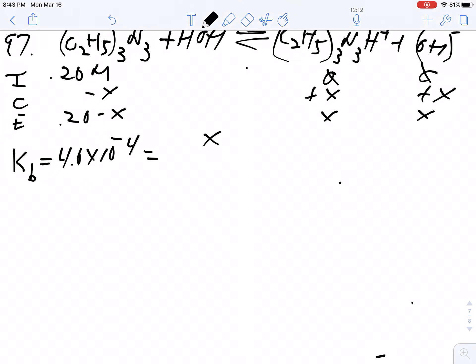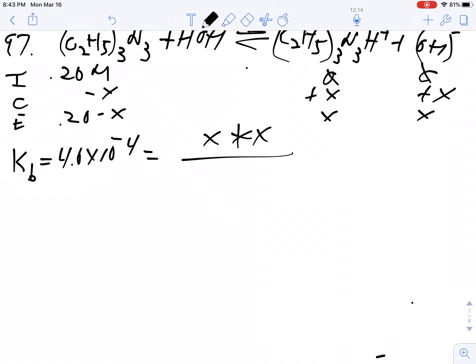This equals x times x over the products over the reactants, on the bottom 0.2 minus x. This x is too small compared to the Kb of 4 times 10^-4. When I solve for x, I'm going to get 0.00894 molar, and that's the concentration of hydroxide.